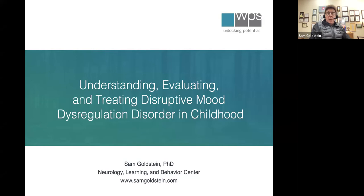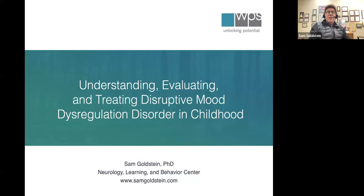Now today, those children that 42 years ago we would have said had severe ADHD with comorbid problems are being referred to as DMDD. But the diagnostic criteria are very discrete, and it's actually quite difficult to fit children into those criteria. We'll talk about why the criteria may be too specific, meaning it may omit children who have problems and need help — milder cases — as opposed to some diagnoses that are more sensitive and will include false positives.